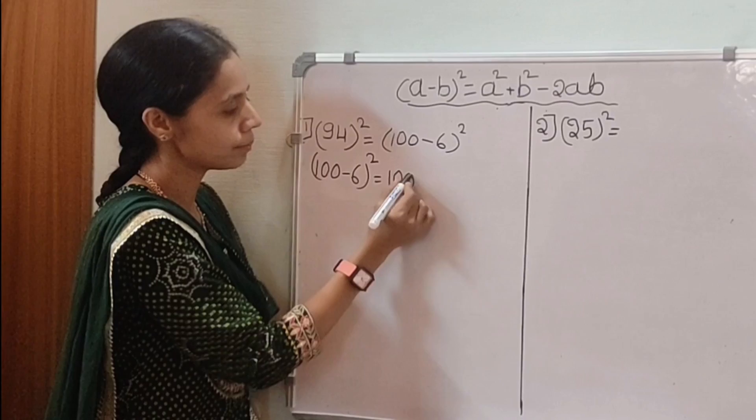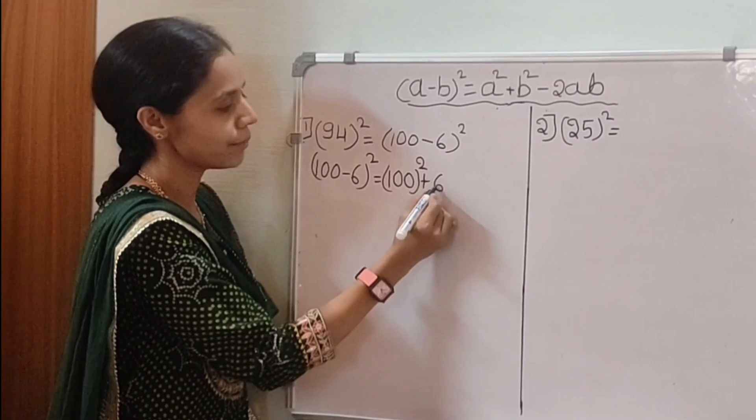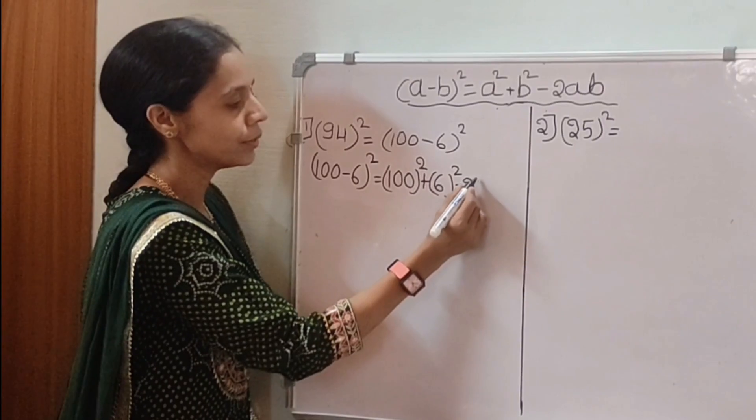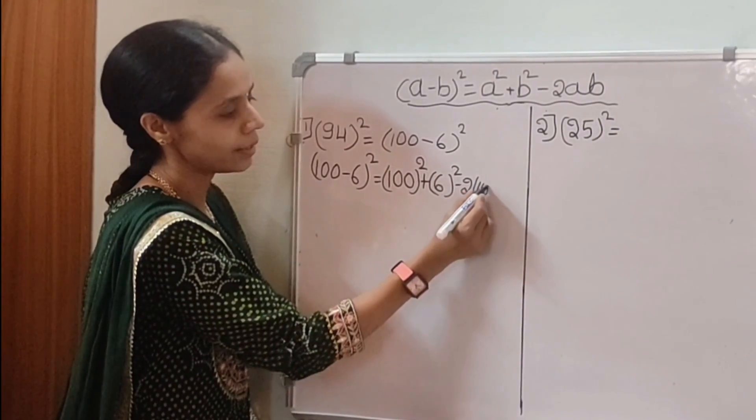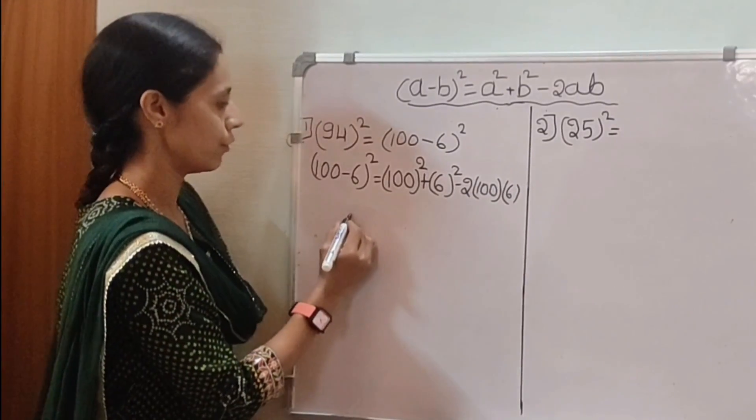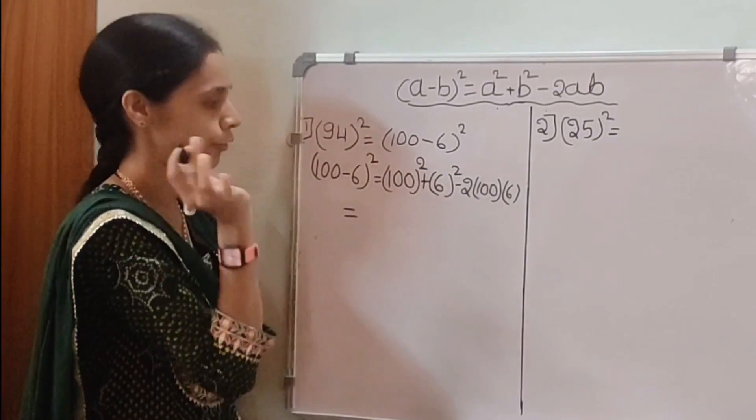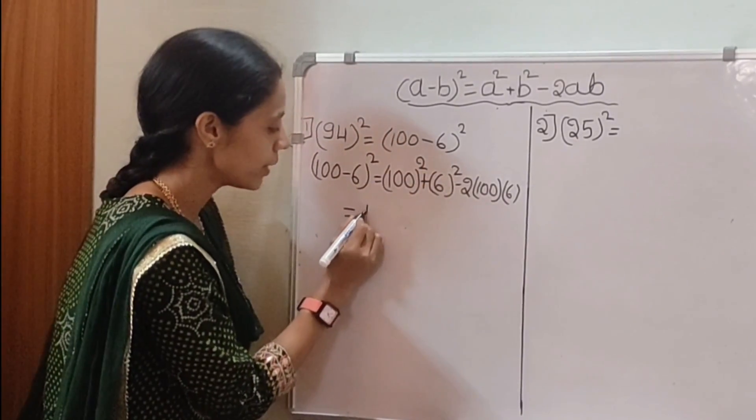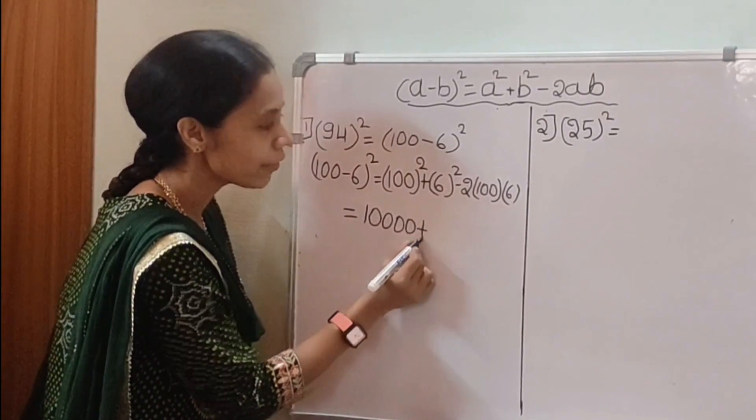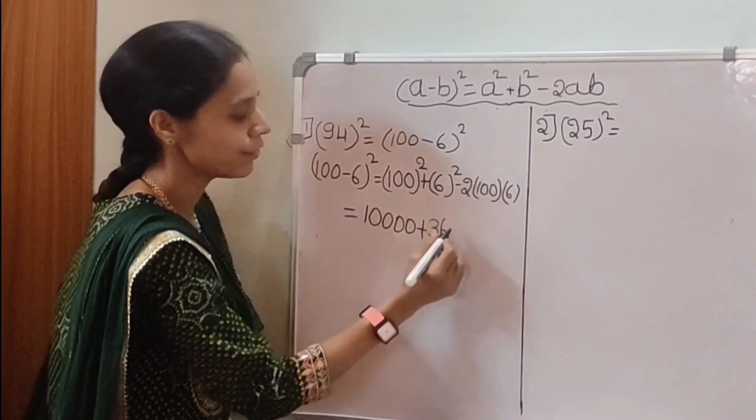Now, 100² + b² means 6² - 2ab means 100 × 6. After simplifying this one, we get the square of 94. The square of 100 is 10,000. The square of 6 is 36. Minus,